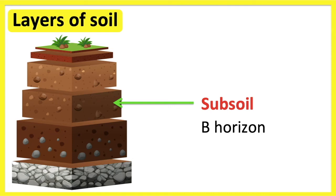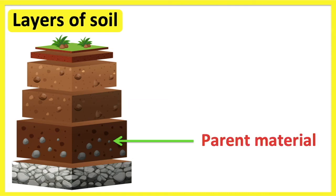The parent material is also known as C-horizon. The parent material is the layer consisting of large rocks. The upper layers are developed from this layer. There is no organic matter or plants in this layer.